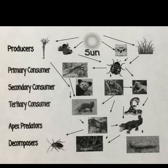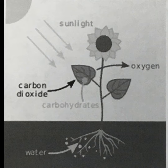Food webs are a mixture of food chains. It starts off with the sun, then to a plant, then a primary consumer, then a secondary consumer, then decomposers. The sun gives energy to all producers and starts off a food web or food chain.